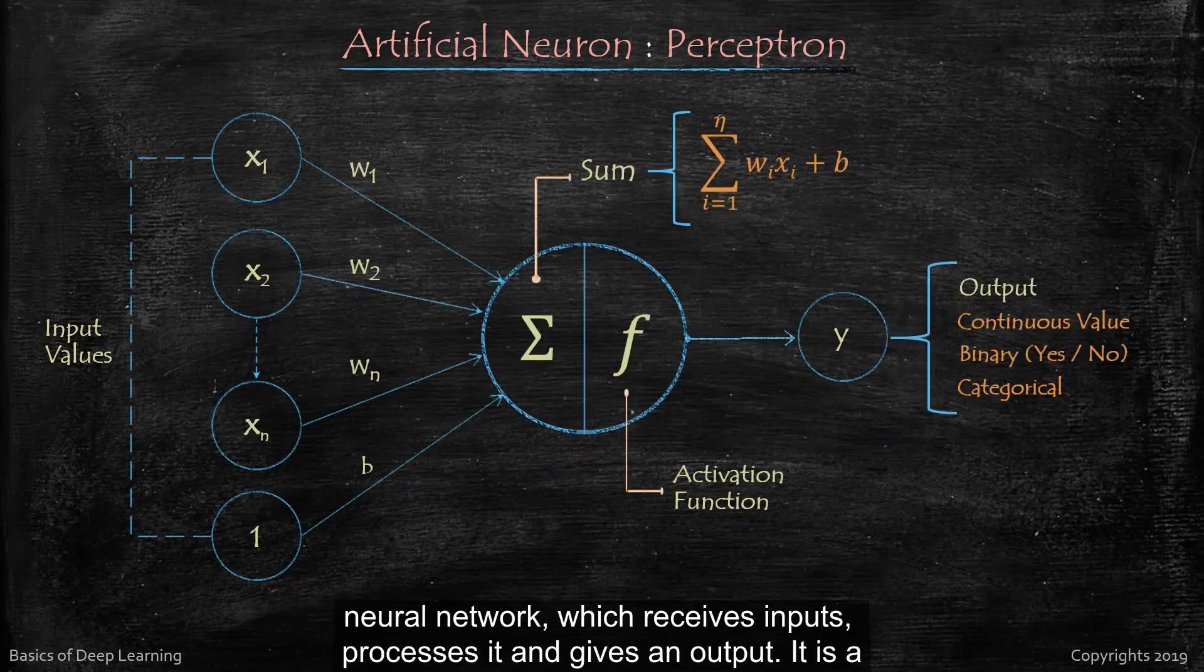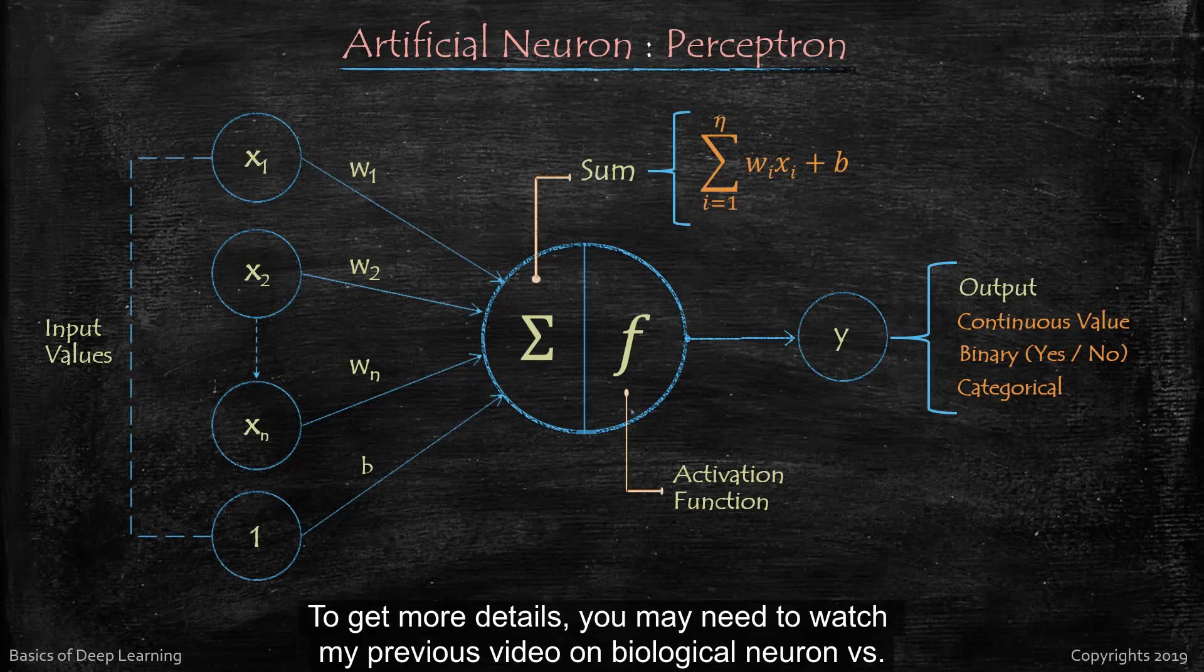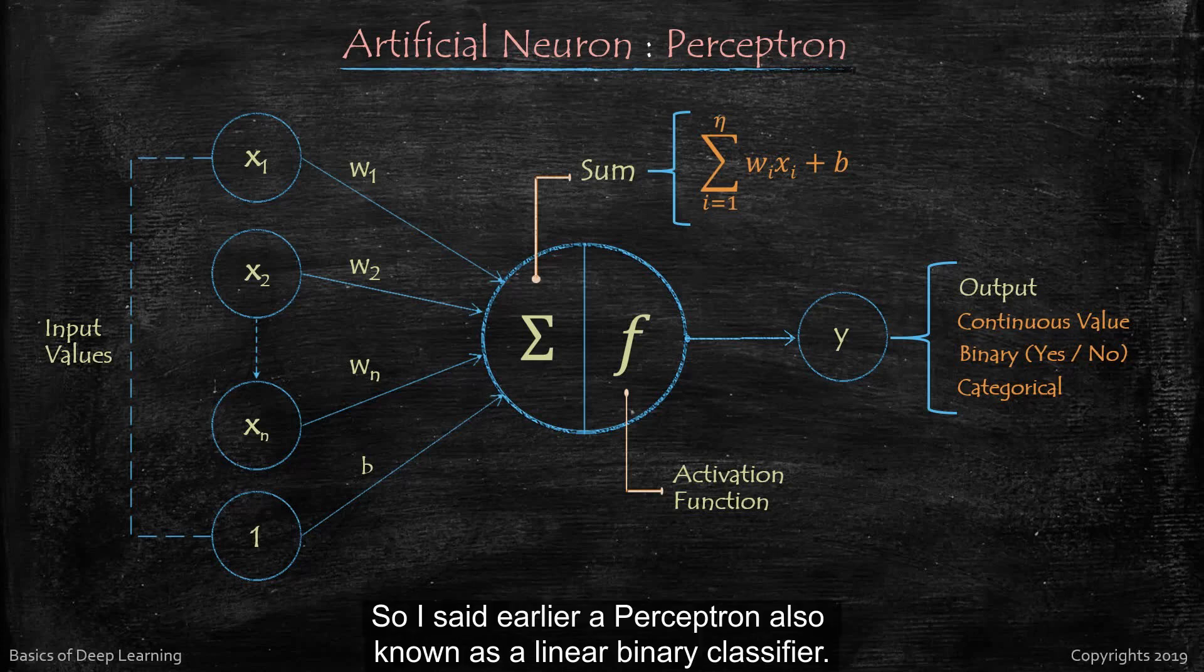Which receives inputs, processes it, and gives an output. It is a clear replica of a biological neuron in our brain cells and works on the same principle. To get more details you may need to watch my previous video on biological neuron versus artificial perceptron. I have provided a link in description.